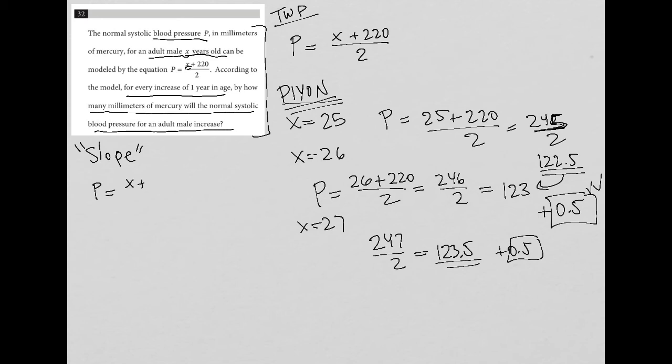I'm going to convert this into a y equals mx plus b form. And the best way to do that is to get rid of this denominator of 2 here. And the best way to do that is to divide each thing by 2. So P equals x over 2 plus 220 over 2, which is the same as one half x plus 110.